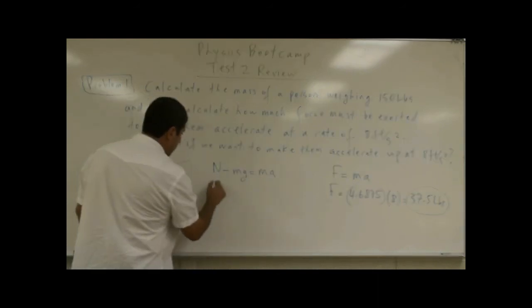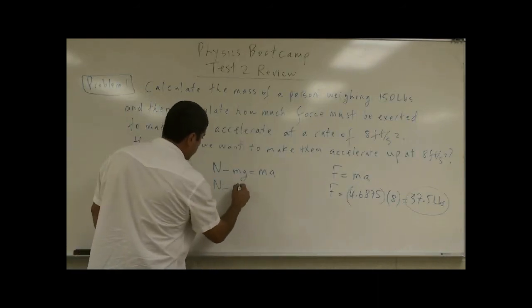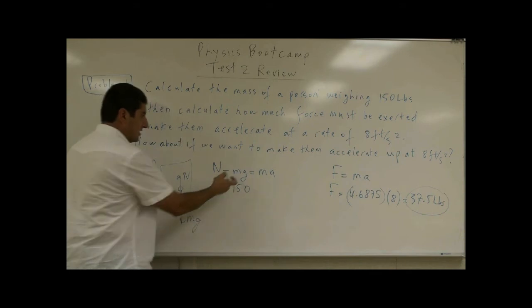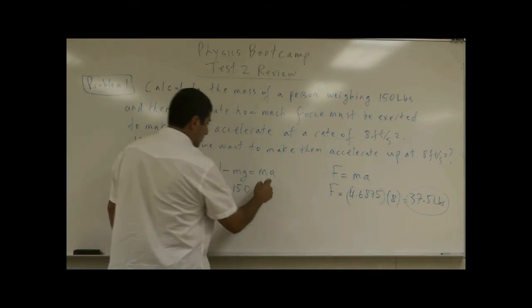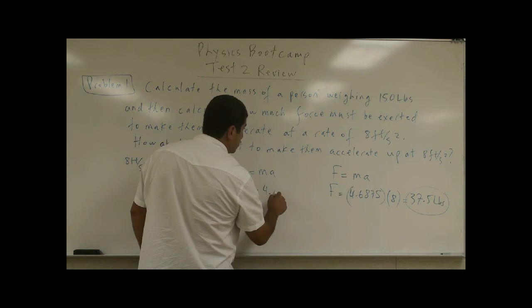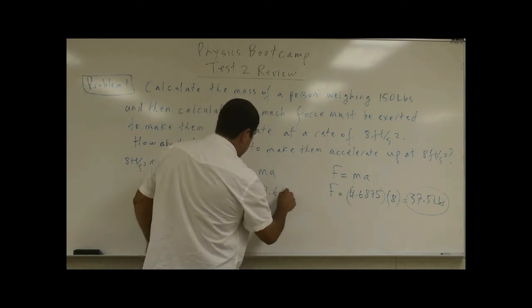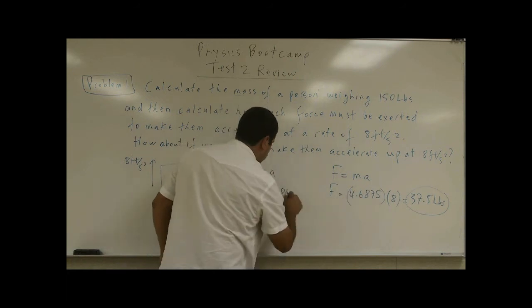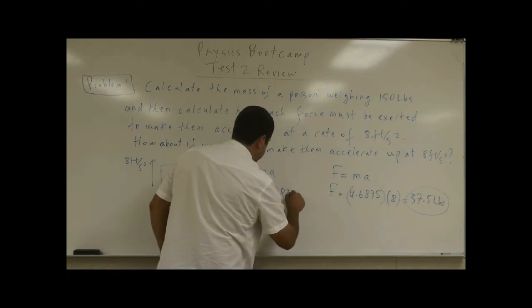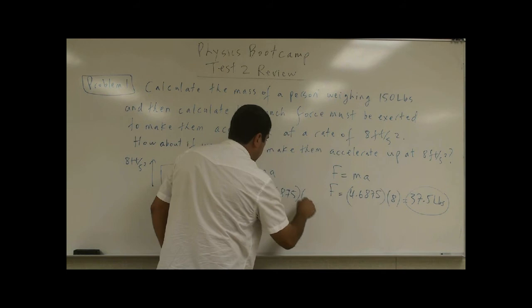So N minus 150, since he weighs 150 pounds, is equal to 4.6875, so I'm using this one here, times 8.